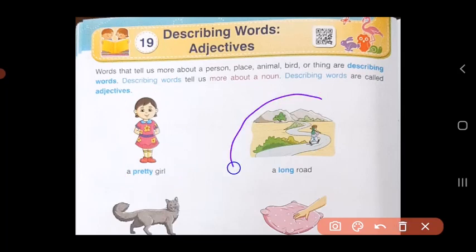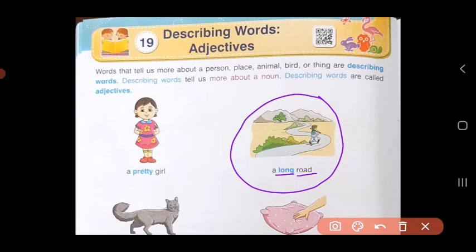Now let us look at the second example. Here they are talking about the road. So road is the noun. But how is the road? A long road. So long is describing your noun, road. So long becomes the adjective.